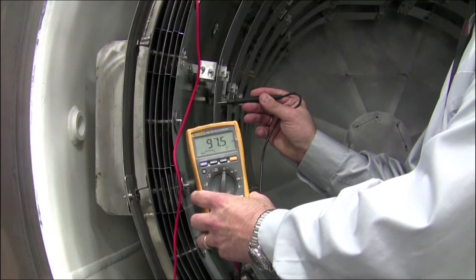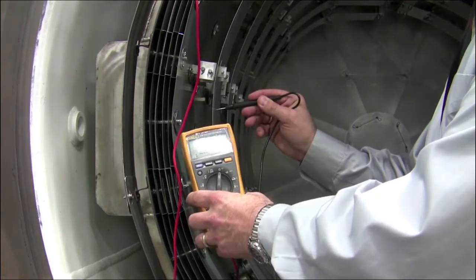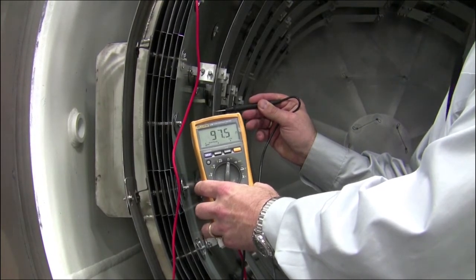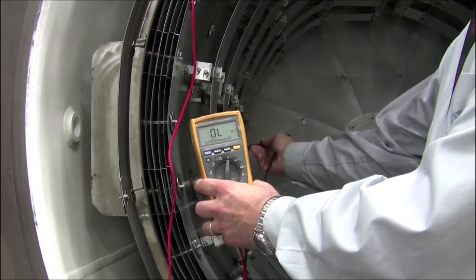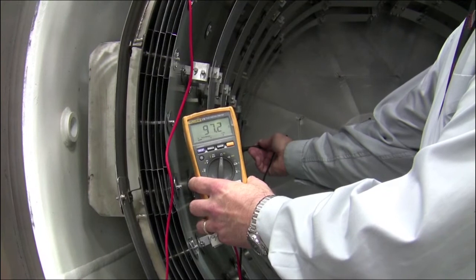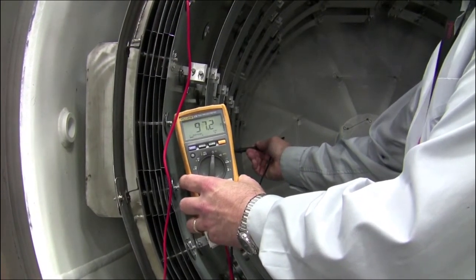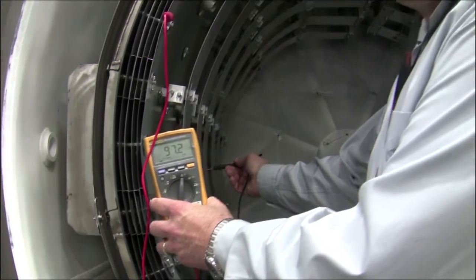As you can clearly see, when I go between earth and the heating elements, I'm reading approximately 97.5 ohms on the front set of elements, 97.2 ohms on the middle set of elements. That's an indication that my ceramics are in very good shape.